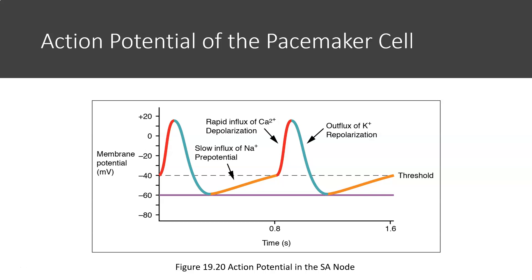First, these pacemaker cells generate action potentials spontaneously. No stimulus is required. Next, in addition to involving sodium and potassium ions, calcium ions play a large role in the action potential. Lastly, these action potentials are much slower and last 800 milliseconds on average.